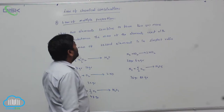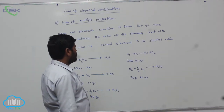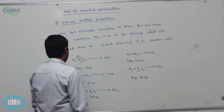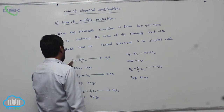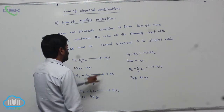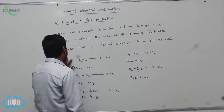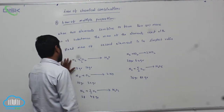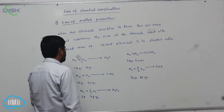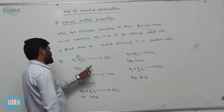This is the Law of Multiple Proportions. For example, N₂ gas reacts with half a mole of O₂ to give rise to nitrous oxide (N₂O). In this reaction, nitrogen is 28 grams, and half a mole of oxygen involved is 16 grams.